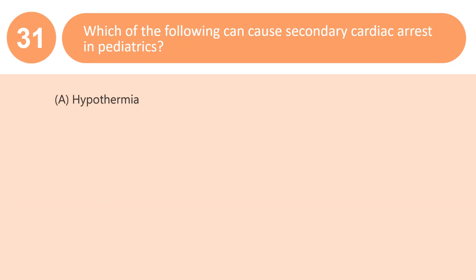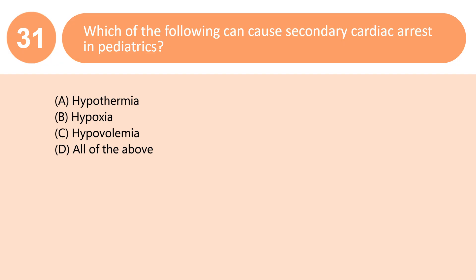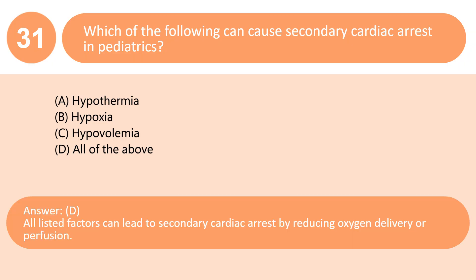Which of the following can cause secondary cardiac arrest in pediatrics? A. Hypothermia. B. Hypoxia. C. Hypovolemia. D. All of the above. Answer: D. All listed factors can lead to secondary cardiac arrest by reducing oxygen delivery or perfusion.